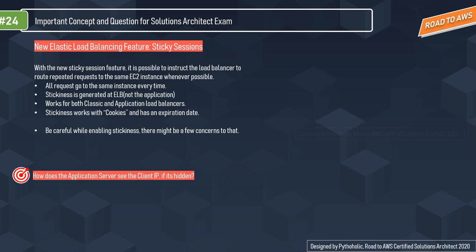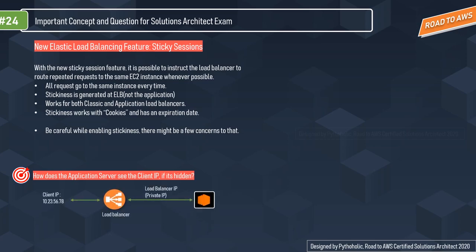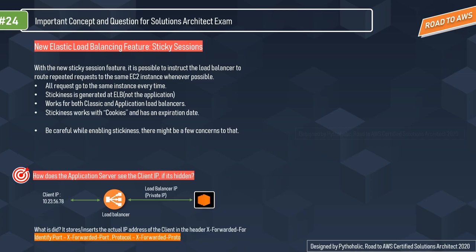When we use the load balancer DNS we mask the actual public IP of the instances. If you look at it from the instance side, it will only see the load balancer's IP and not the actual IP of the client. So if you need to see the client's IP at your application side, you use the X-Forwarded-For HTTP header. The X-Forwarded-For request header helps you identify the IP addresses of the client when using an HTTP or HTTPS load balancer. The elastic load balancing stores the IP address of the client in the X-Forwarded-For request header and passes it to your server. The syntax is: X-Forwarded-For: client-ip-address.